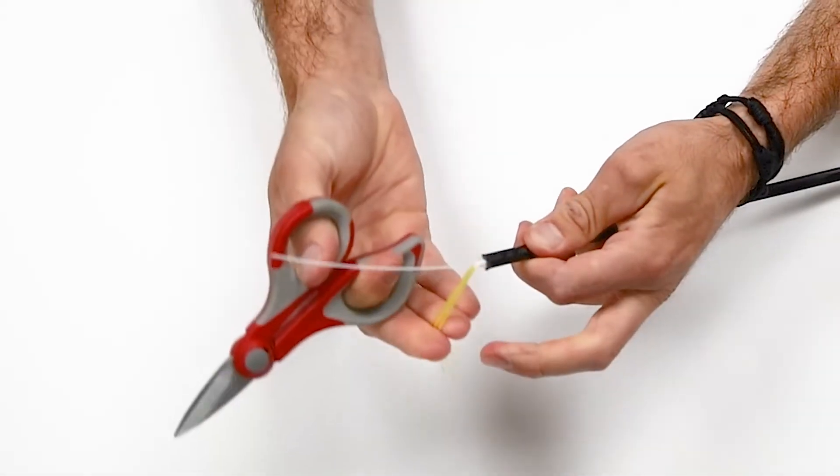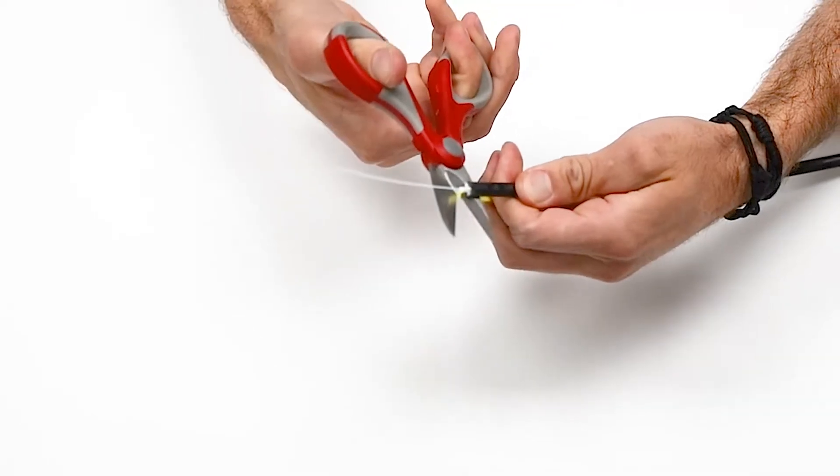Now grab your Kevlar cutting shears and remove the aramid yarn inside of the fiber.